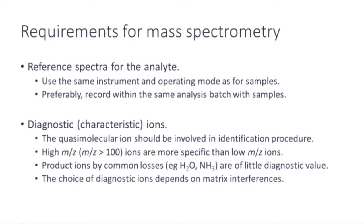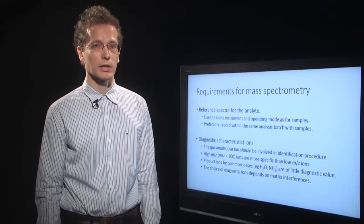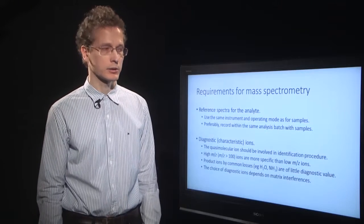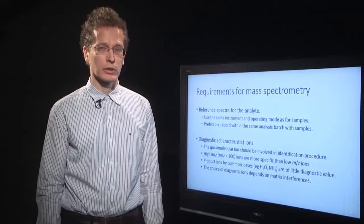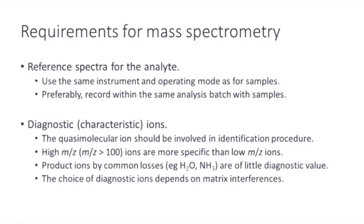Usually we don't record full mass spectra. Instead, we record a small subset of diagnostic ions. For diagnostic ions, the quasi-molecular ion is of particular interest as this reflects the molecular mass of the compound. Therefore, a quasi-molecular ion should be included within the diagnostic ions for identification purposes. It can be included directly as a quasi-molecular ion or as a parent ion for some fragmentation.